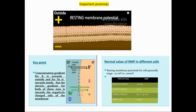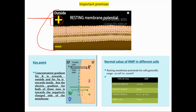Before looking at how this happens, we have to make an important premise, otherwise you can't understand what we're talking about. Whenever we look at any cell and examine what's going on from an electrical point of view — outside versus inside — we can recognize a resting membrane potential. This resting membrane potential is always such that the internal environment is electrically negative versus the outside.